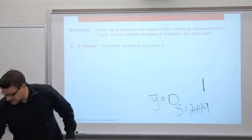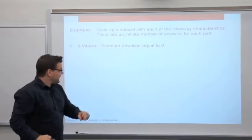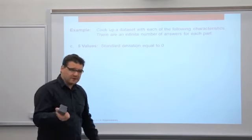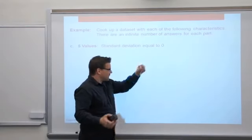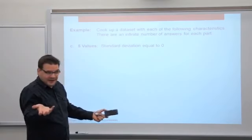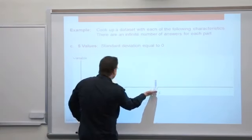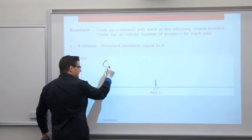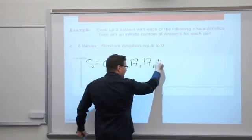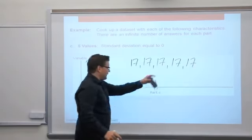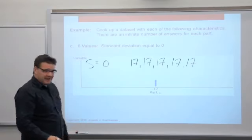Part C: standard deviation equal to zero, and we want five data values. Probably the easiest one of all our examples. Standard deviation equal to zero means no spread, so all of the data values just have to be the same. Essentially, pick your lucky number — I picked 17. Here's the data set: five values, they're all 17. The standard deviation will end up being zero, and the mean is 17.